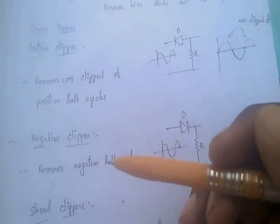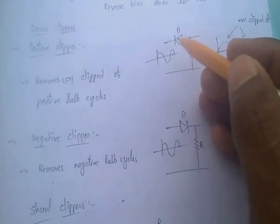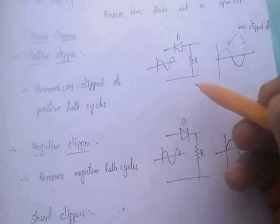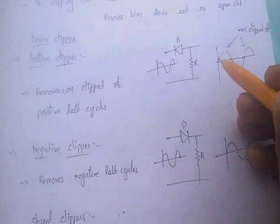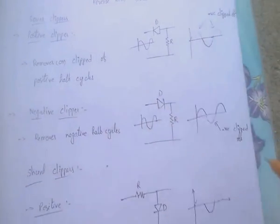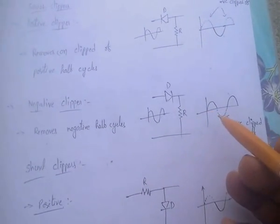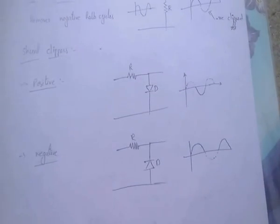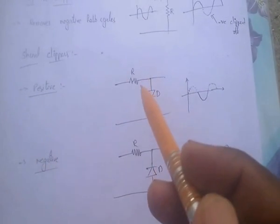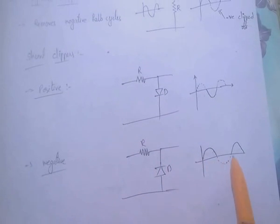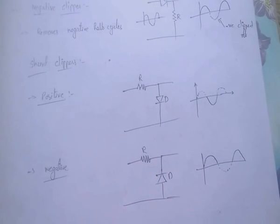Examples of clippers include: series clipper, positive clipper, and negative clipper. In the positive clipper, the positive half-cycles are clipped off. In the shunt positive clipper, positive half-cycles are clipped off, and in the shunt negative clipper, negative half-cycles are clipped off.